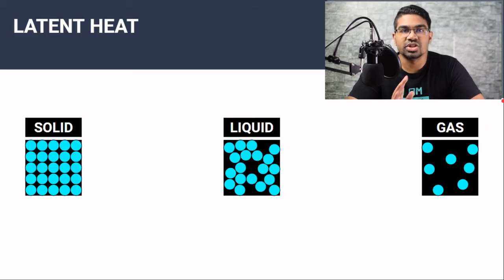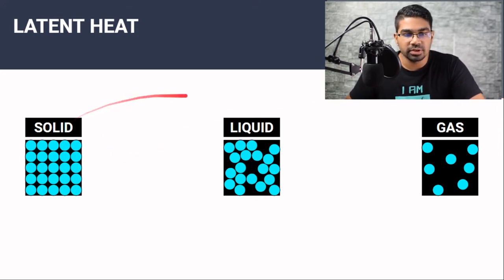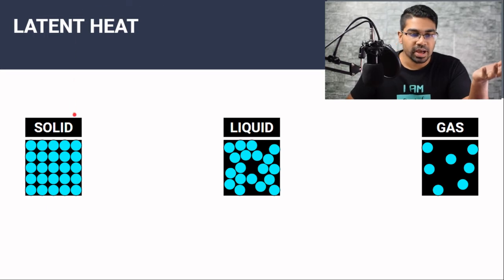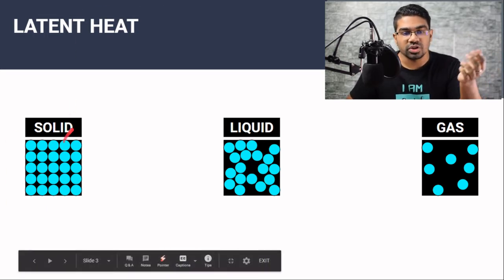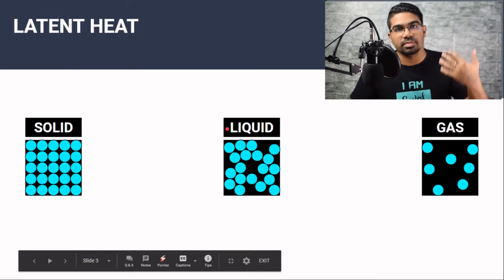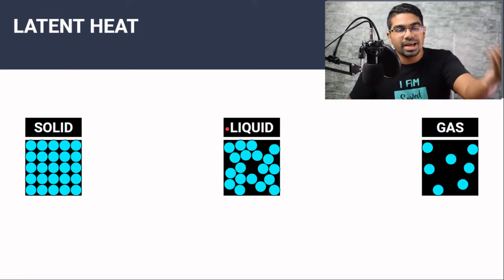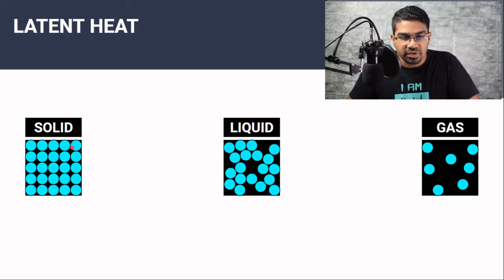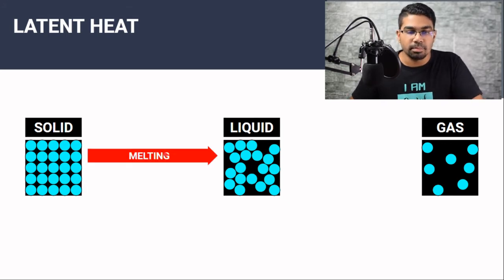Latent heat is involved when there is a change in phase of matter. When we look at changes in phases, we are going from solid to liquid to gas, or from gas to liquid to solid. Take an ice block for an example — the ice block is in the solid form. When the ice block is changing phase, we need to supply heat energy. This energy is used by the ice particles to overcome the forces of attraction between the solid particles, so that they can move further apart and become liquid. This is melting.